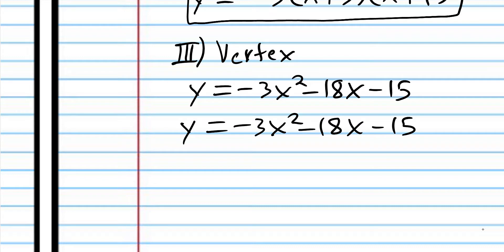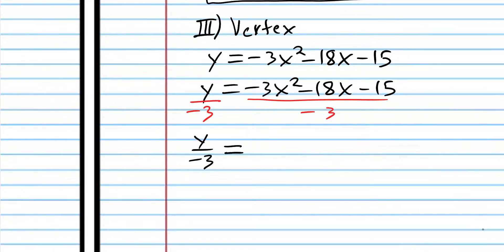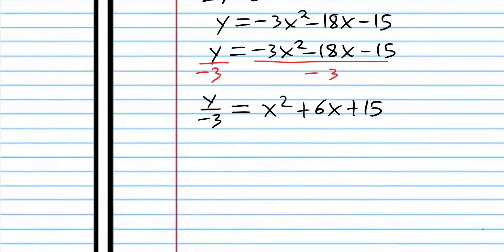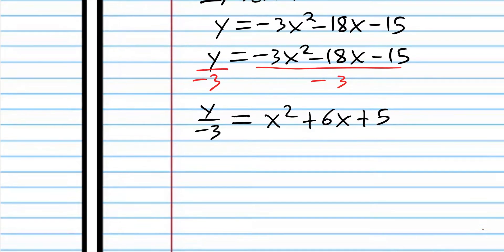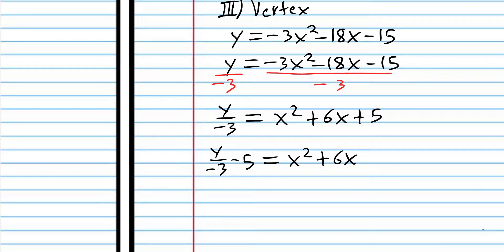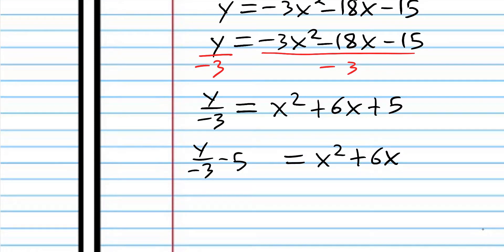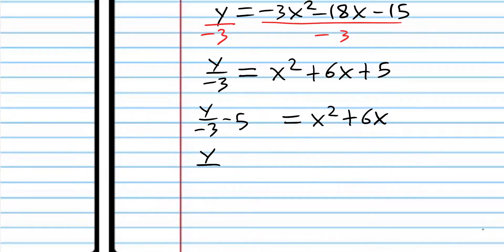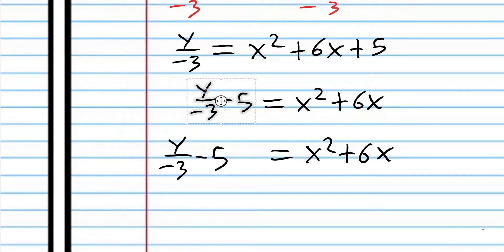It's easiest to start with standard form. To convert to vertex form, we have to complete the square, but we can't do that with a coefficient of negative 3 on the x squared term. So we have to divide both sides by negative 3 to get rid of it. Now we're going to subtract 5 from both sides, and then we're ready to complete the square: the coefficient of x divided by 2 and squared gives us 9.